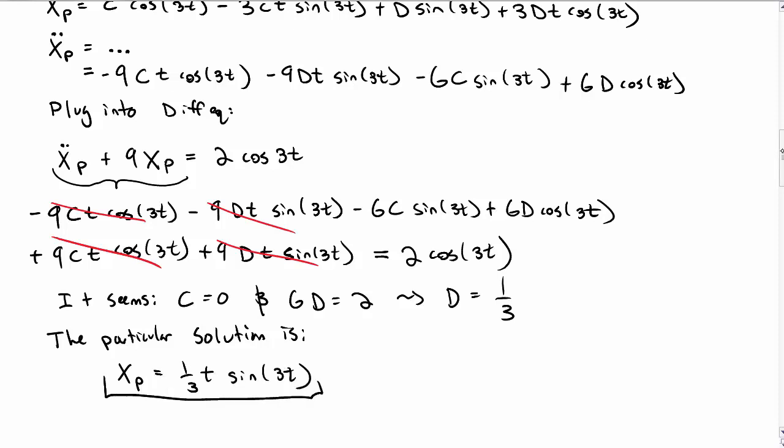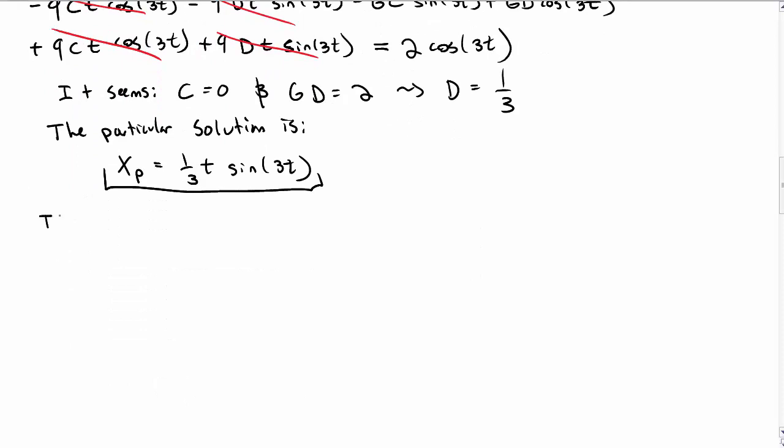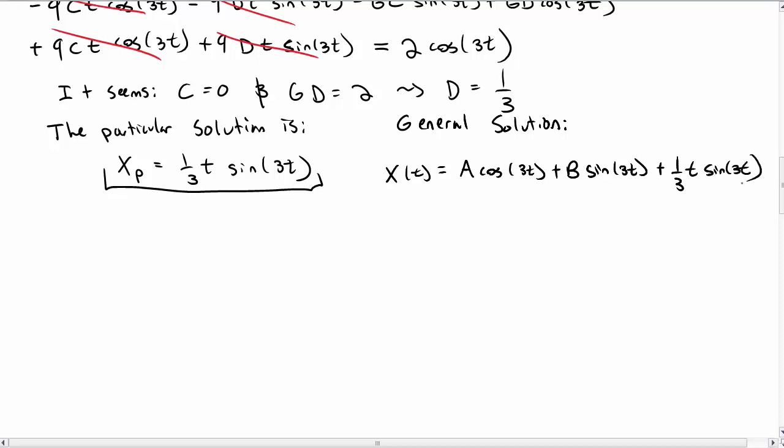Again, it has that extra factor of t out front. So the general solution is I just add the homogeneous solution that I obtained before to the particular solution, and so now this is my overall general solution.